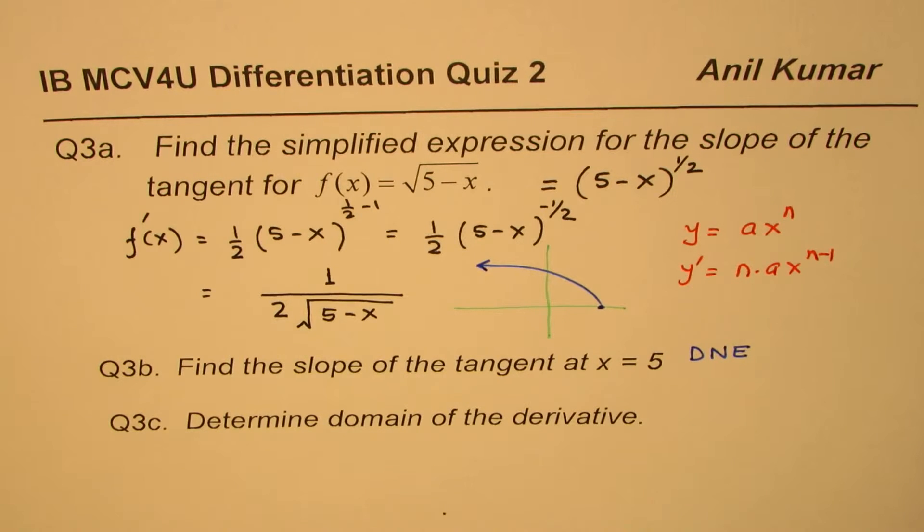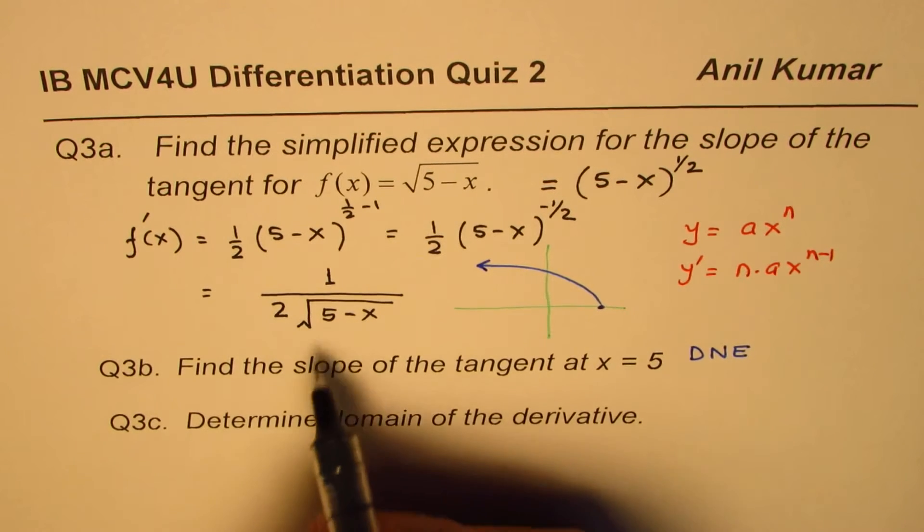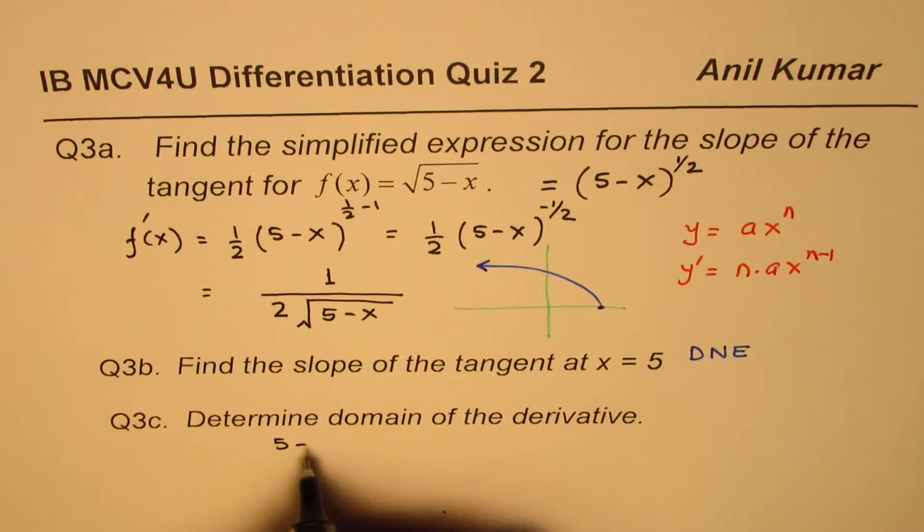So that's part B, and part C is: determine domain of the derivative. Now, since 5 - x was within the square root and it is in the denominator, to find domain, 5 - x should be actually greater than 0.